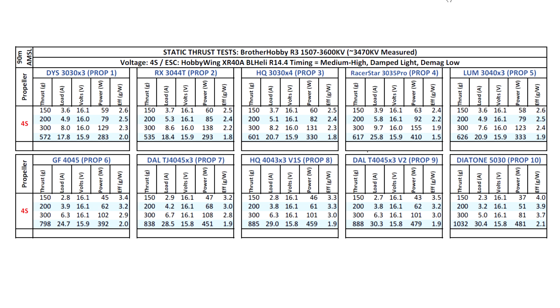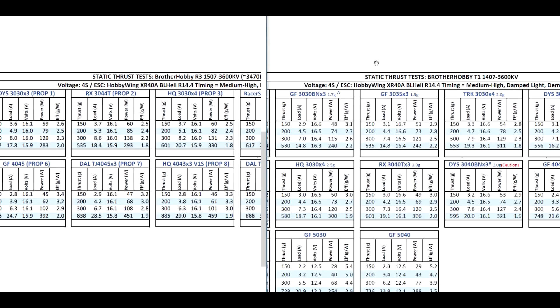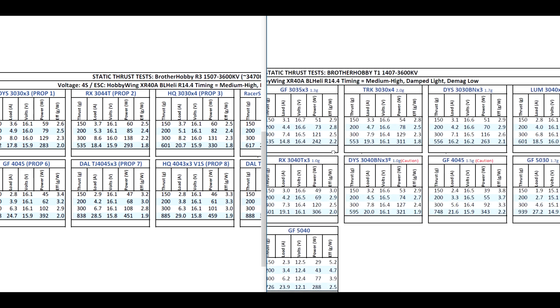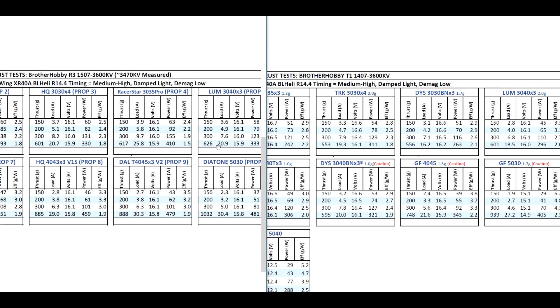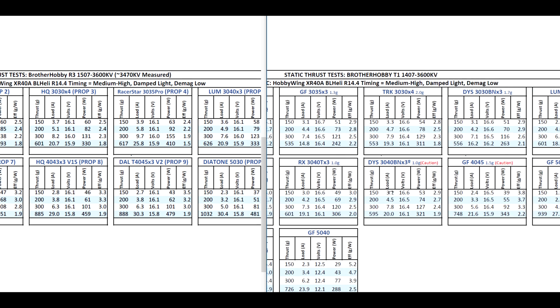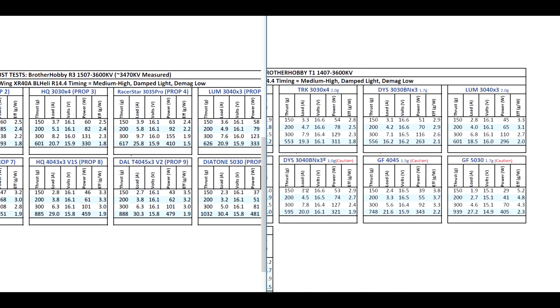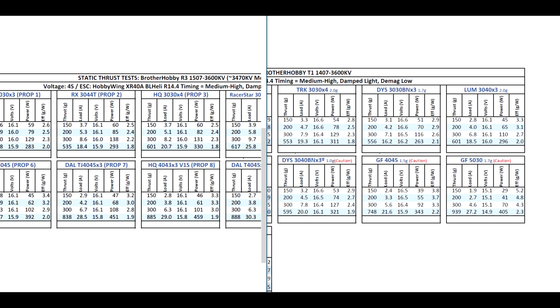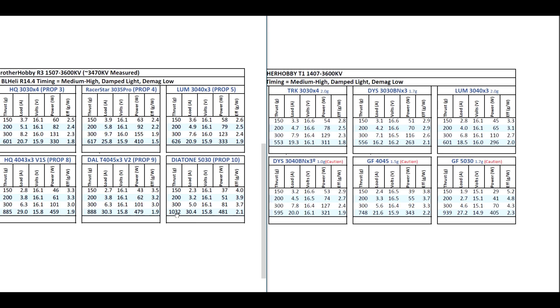So we'll do a side by side, a quick side by side with the 1407, just to compare a couple of the props, just to see how it compares. Alright, so here we have the results for the 1407 that I tested a while back. So it's going to be interesting to see how both motors compare. As you can see, with the 3030x4, the 1507 has a slight advantage, and it just continues with all the props pretty much, Lumineer 3040x3, slightly more thrust at just slightly higher amps. And as we move on to the larger props, the 4045, still the advantage continues. As you can see, pretty much almost 50 grams higher. And with the 5 inch prop, also a little bit higher thrust. So that's pretty good.